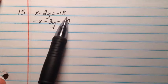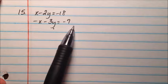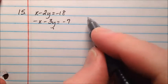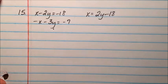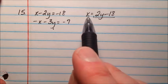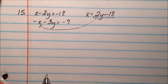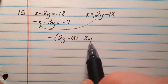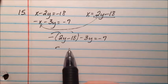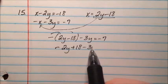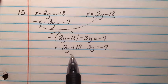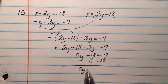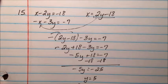For number 15, the system is x minus 2y equals negative 18, and negative x minus 3y equals negative 7. The x in the first equation is almost solved for, so we add 2y to both sides to get x equals 2y minus 18. Substituting that into the second equation gives negative the quantity 2y minus 18, minus 3y equals negative 7. Distributing the negative gives negative 2y plus 18 minus 3y equals negative 7, so negative 5y plus 18 equals negative 7. Subtracting 18 gives negative 5y equals negative 25, so y equals 5.